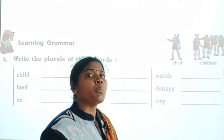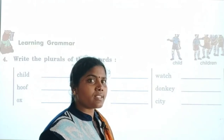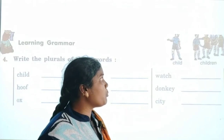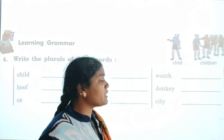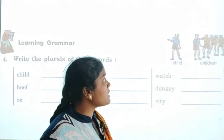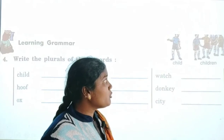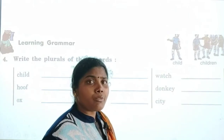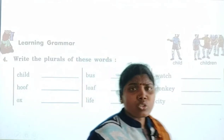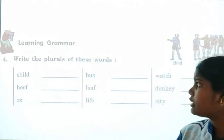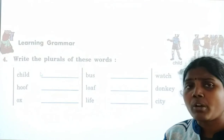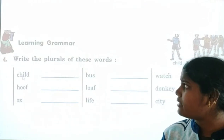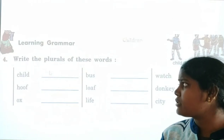More than one is called the plural form. Here only one boy is standing — that is singular. Here four boys are standing — that is the plural form 'children.' So we are going to write the plural form of these words. Child — plural form is children.